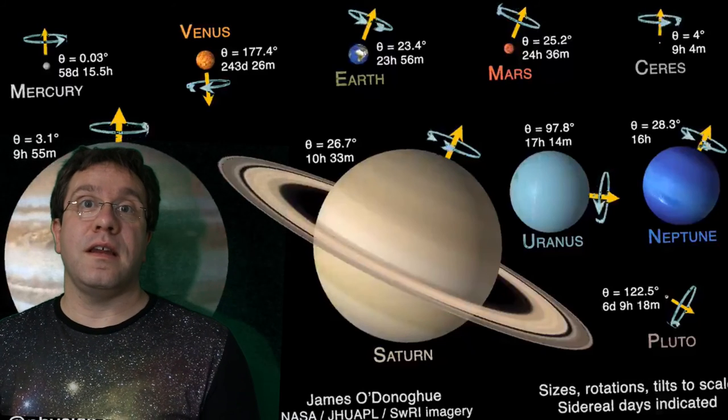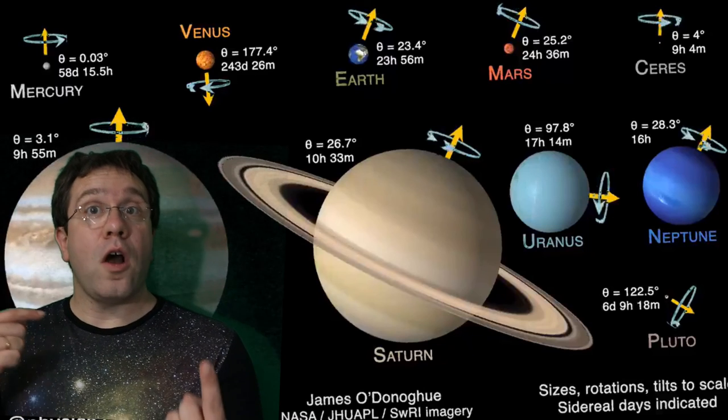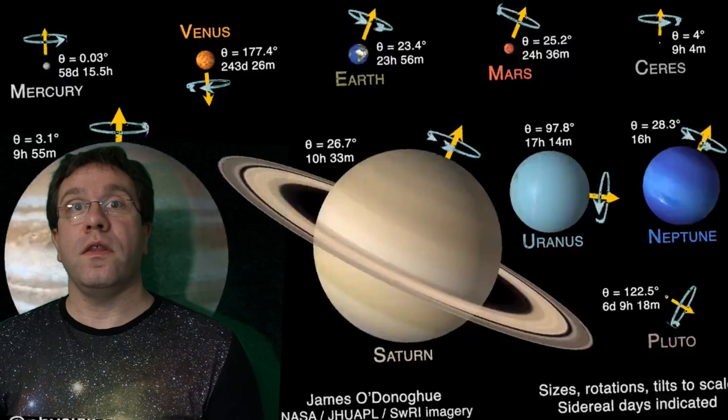Again, it spins about every 16 and a half hours. So that's how the planets rotate as they orbit around the Sun. They spin on their axis, and that spin is the length of the day on those planets. Thanks for a great question.